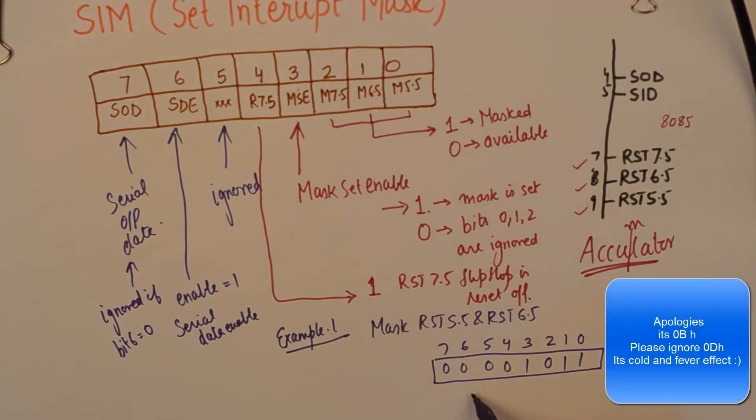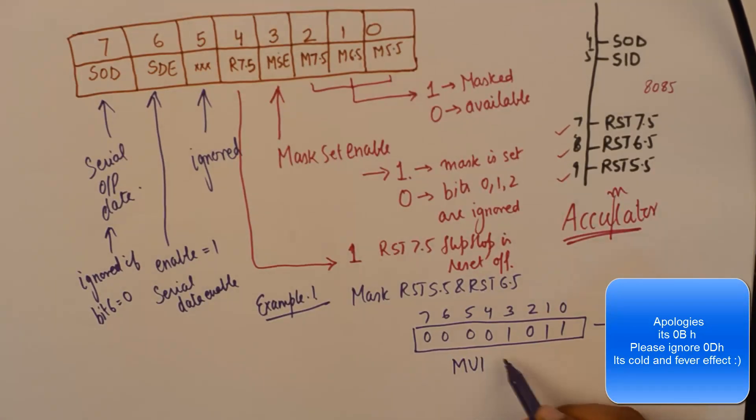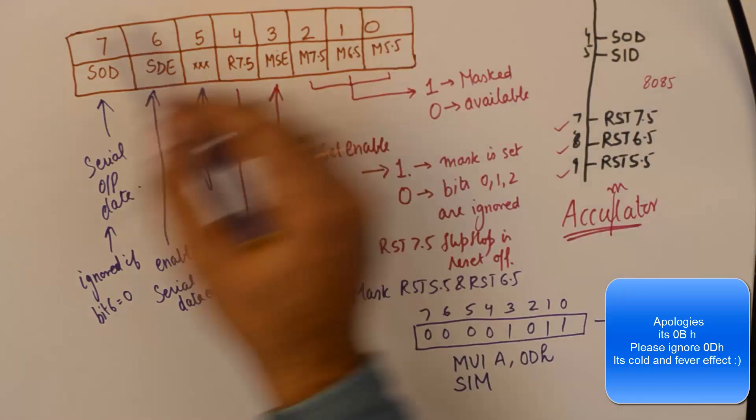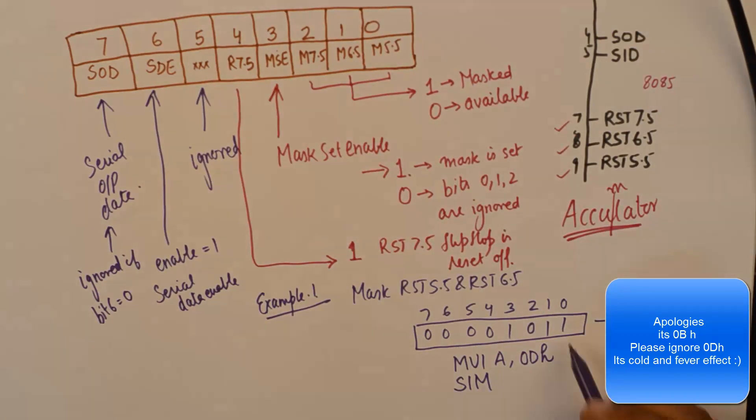So what I will do is, I will put this data MVI A, 0DH. I will put the code 0D into A and then I will simply run SIM. Now, SIM is going to set the bits in A according to what we have learned so far. This is very efficient way of setting the mask on interrupts.